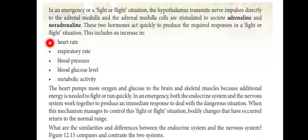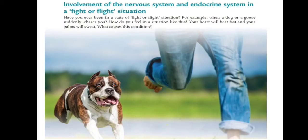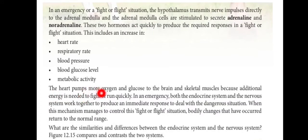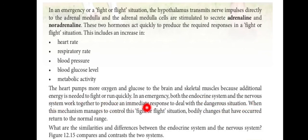The responses include increased heart rate, respiratory rate, blood pressure, blood glucose level, and metabolic activity. The heart pumps more oxygen and glucose to the brain and skeletal muscles because additional energy is needed to fight or run quickly. In an emergency, both the endocrine system and the nervous system work together to produce an immediate response. When the mechanism manages to control the fight or flight situation, the bodily changes return to the normal range.